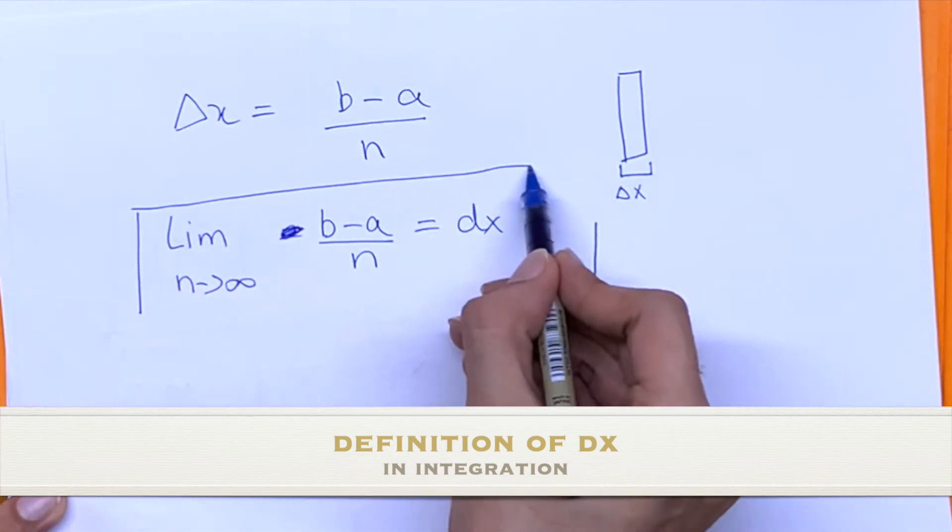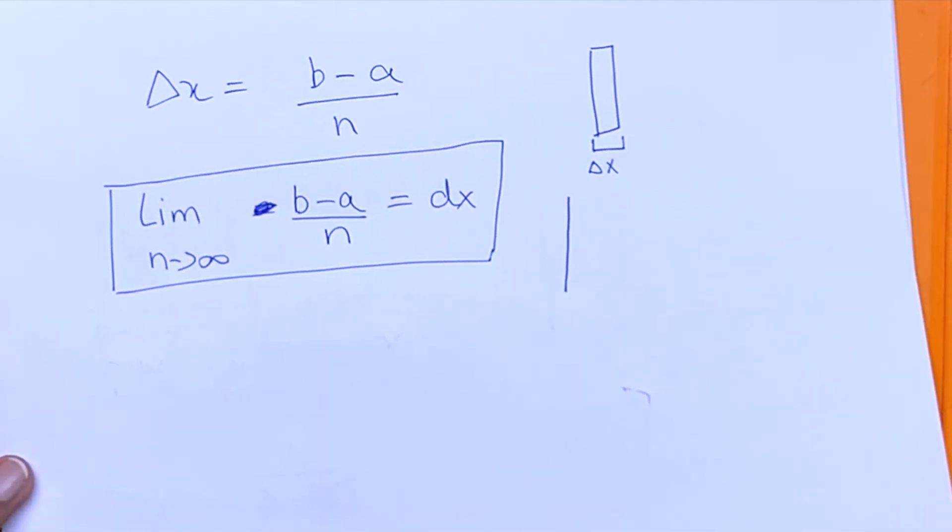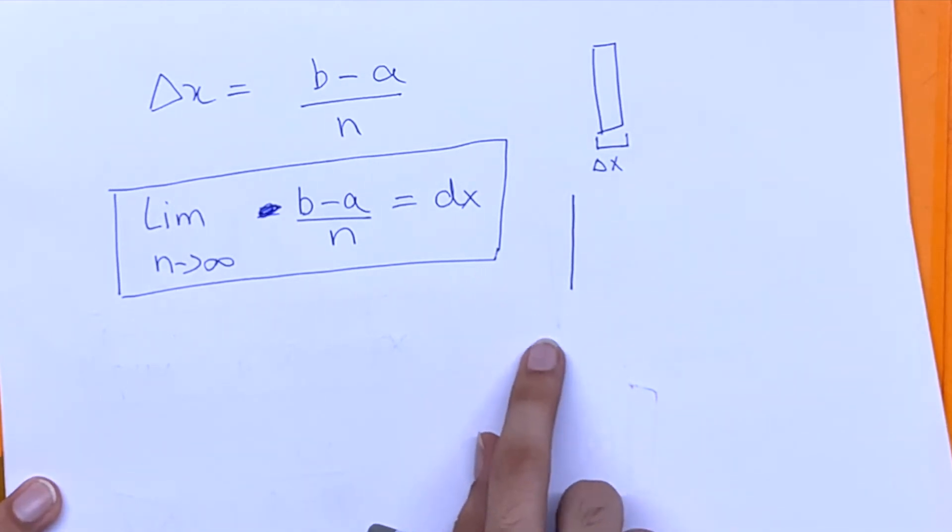So this is the definition for dx and I hope you guys understood why we need to put the dx because that represents the base of each rectangle we're using to calculate the area under the graph.